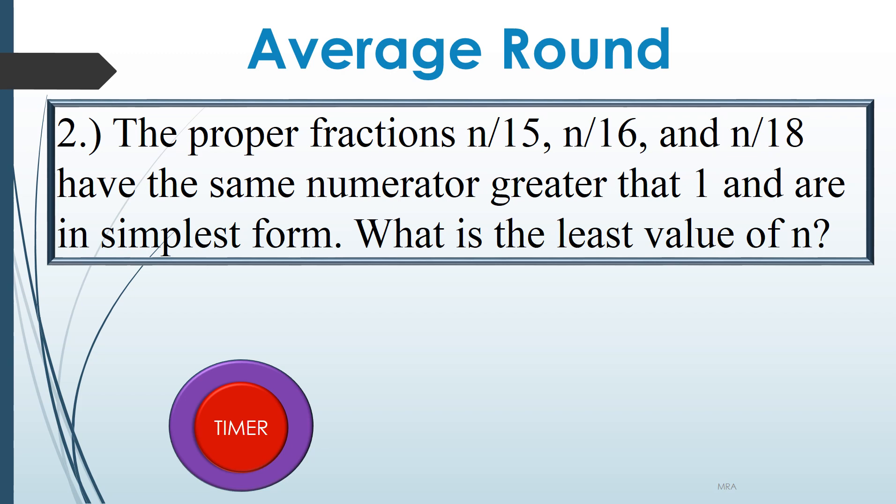The proper fractions n over 15, n over 16, and n over 18 have the same numerator greater than 1, in simplest form. What is the least value of n? Go.